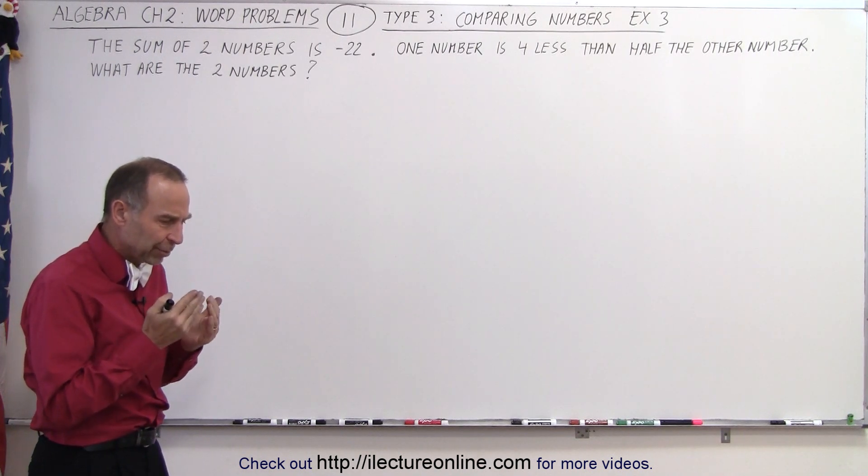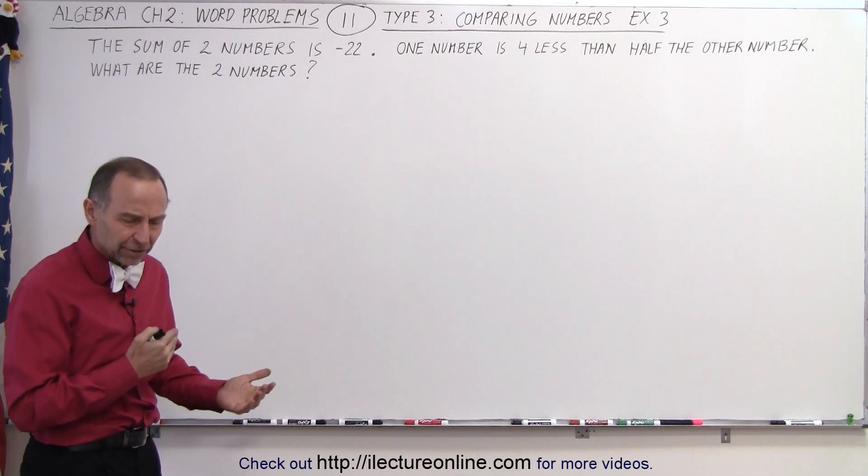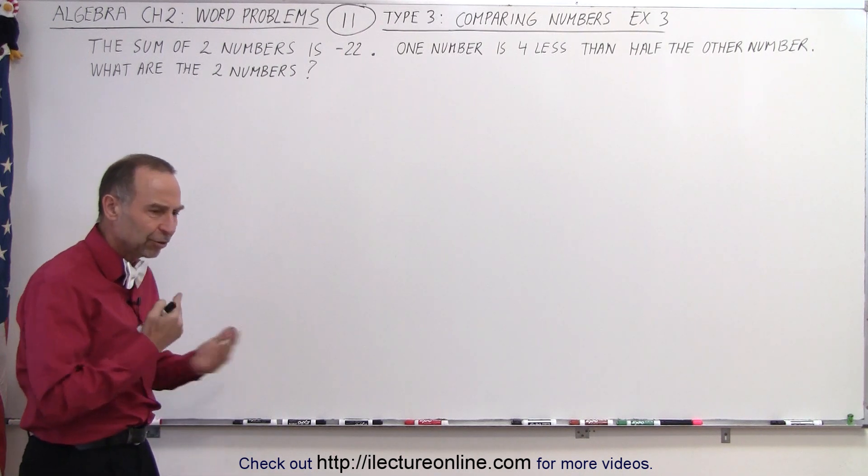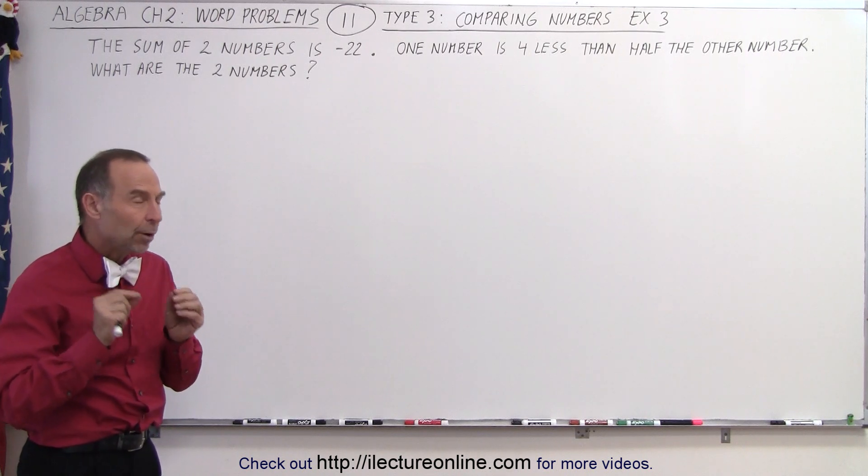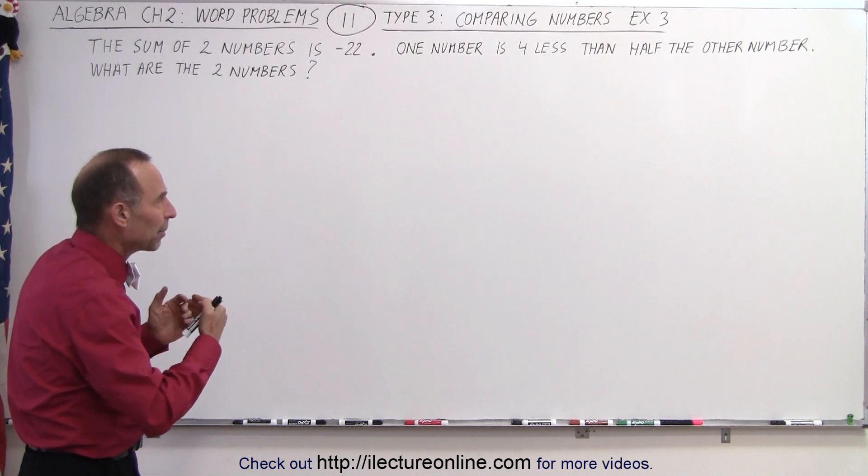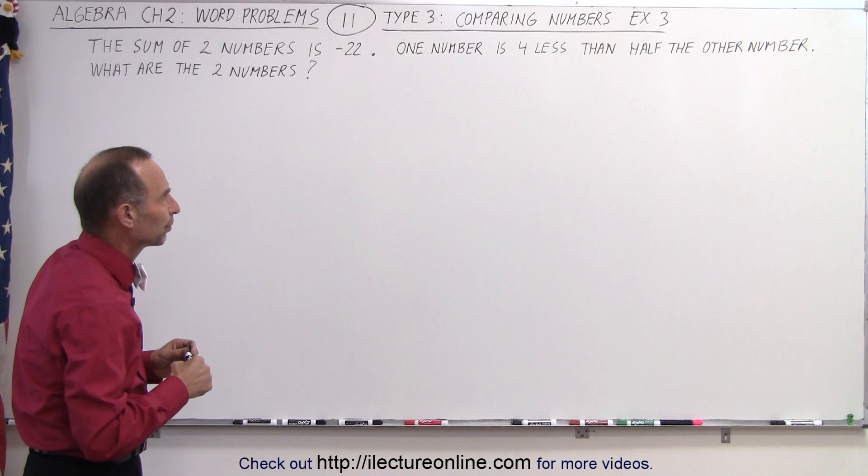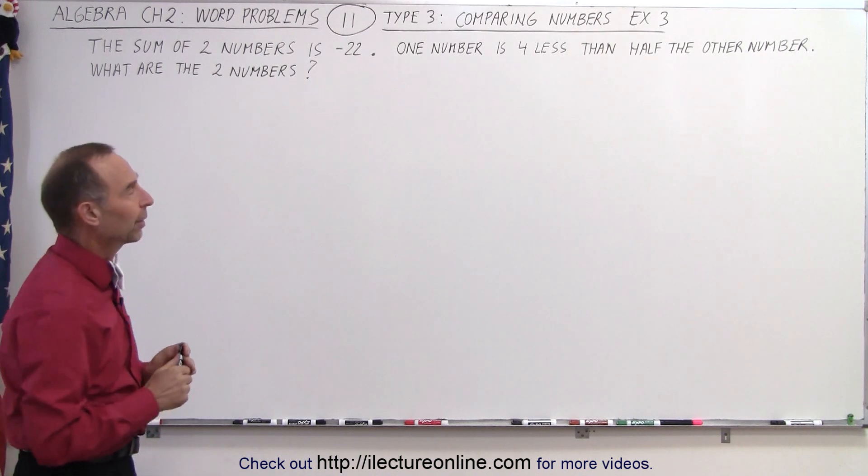So here when we're dealing with negative numbers, and one is less than the other, and one is half the other, what we need to do is be very careful in defining what we're dealing with and working the problem out strictly by definition. Then we need to check to make sure we got it right.